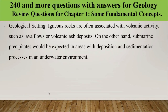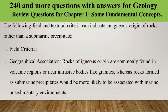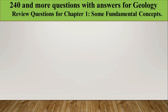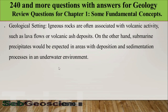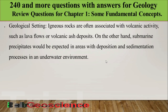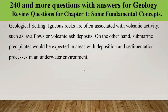The second field criterion is geological setting. Igneous rocks are often associated with volcanic activity such as lava flows or volcanic ash deposits. Marine precipitates, on the other hand, would be expected in areas with deposition and sediment processes in an underwater environment.